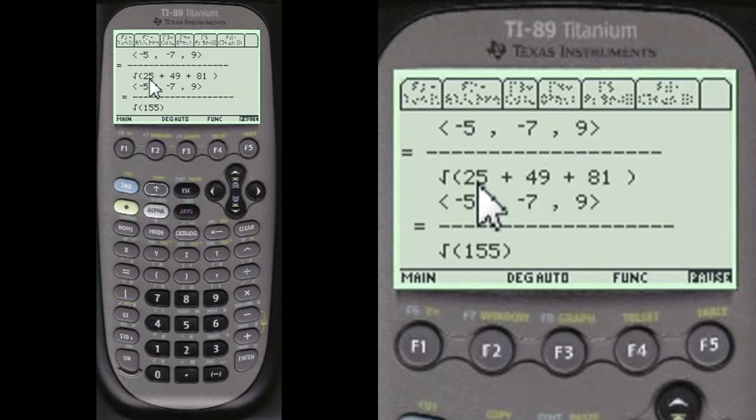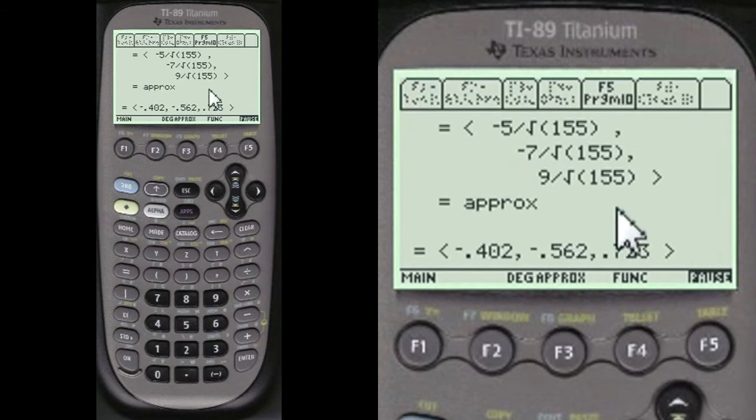And that boils down to these. And then the actual value is square root of 155 with the q minus a on top, or numerator. And so minus 5 times the denominator. Approximately 0.402. There's the answer in a vector form.